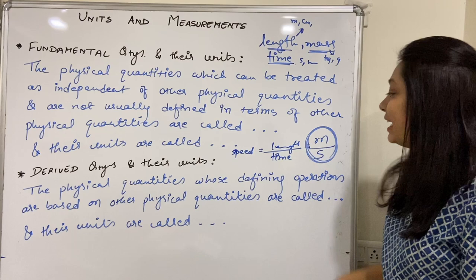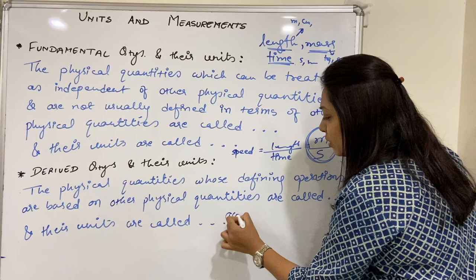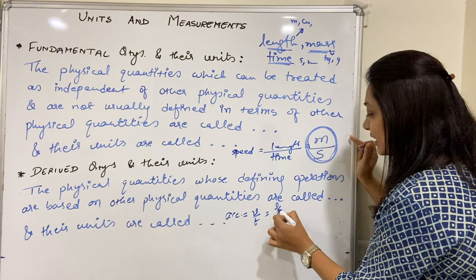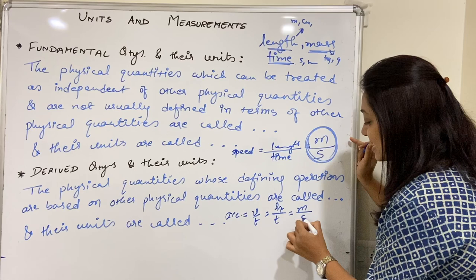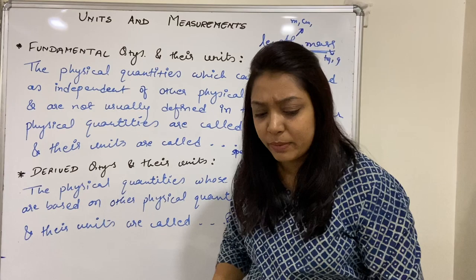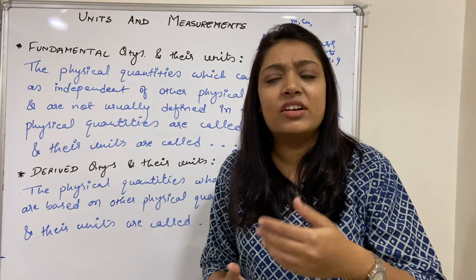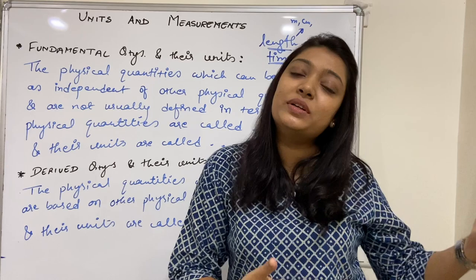Similarly, acceleration — it is velocity upon time. Velocity kya ho gaya? This is again length per time, and below there is time. So this becomes meter per second squared — yeh ho gaya derived unit of the derived quantity acceleration. Similarly, force is derived on the basis of two terms: mass and acceleration. So ek fundamental quantity ya do teen fundamental quantities ya ek fundamental ek derived — in sab ko mila ke jab hum gradually alag alag quantities banate jaate hain, these all fall into the criteria of derived quantities.